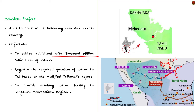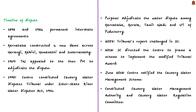The Kaveri rises in the Brahmagiri ranges of the Western Ghats in the Coorg district of Karnataka. Harangi, Hemavati, Shimsha, Arkavati, Lakshmana Tirtha, and Suvarnavati are the major tributaries joining the Kaveri in Karnataka. Kabini, which drains the north Malabar of Kerala, flows through Karnataka and joins the Kaveri. Bhavani, Amaravati, and Noyyal are the tributaries in Tamil Nadu.